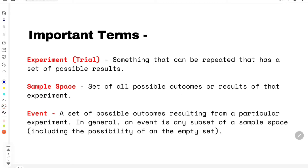While we are dealing with probability, there are three main terms we have to understand so that we can grasp the remaining concepts very easily. The first is what is an experiment or a trial. An experiment is something that can be repeated and it has a set of possible results. For example, the most widely used example is tossing of a coin — one toss of a coin is an experiment or a trial.